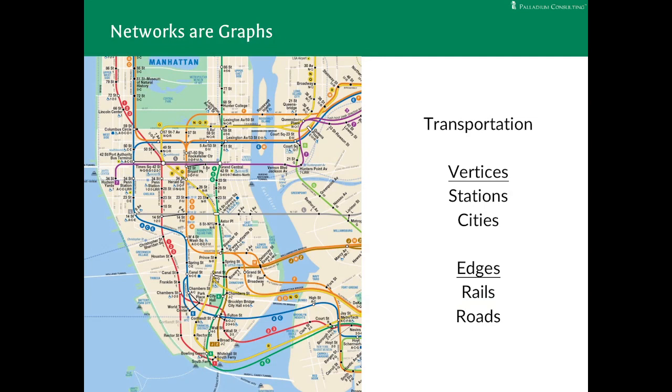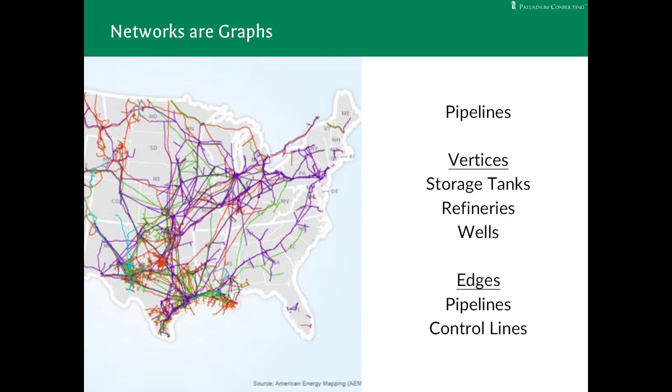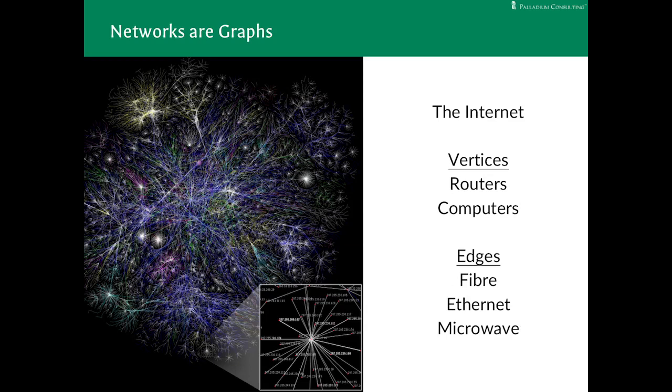Transportation networks are graphs with rails connecting stations and roads connecting cities. You could put this in any kind of database you want, but in real life, it's a real graph. Pipeline networks for oil and gas or transmission lines are graphs connecting wells and refineries or power stations, transformers and homes. And of course, the internet itself is a graph connecting computers and routers by all manner of networking.